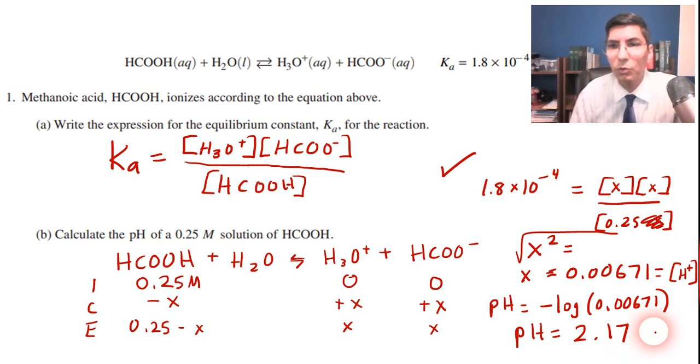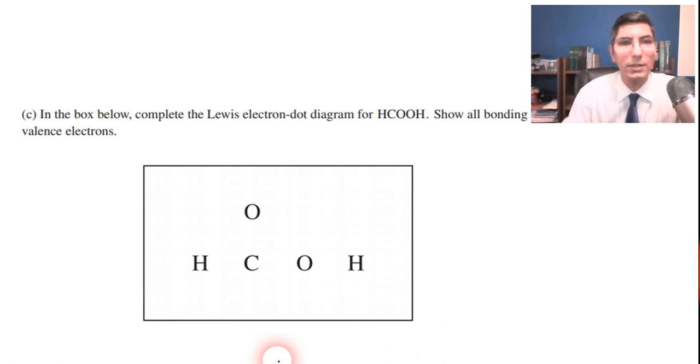Negative log of 0.00671, and when you do that you find that pH equals 2.17. I would imagine that this would be a two-pointer question. They would give you one point for calculating the H plus concentration correctly and then one point for calculating the pH correctly. So up to three points at this point.